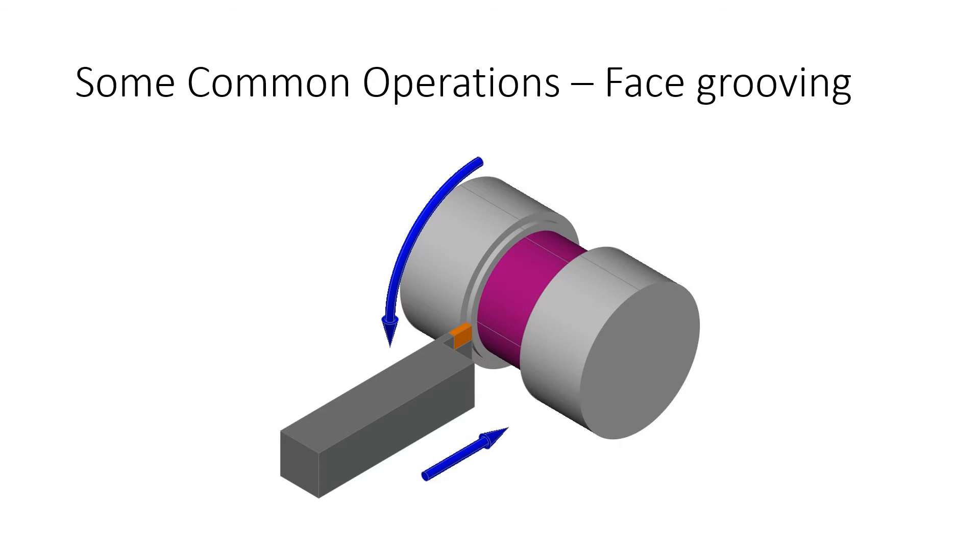Now we can have another operation also called face grooving in which the tool is moved like that and the workpiece is moving in the same direction. These are just some common basic operations of lathe and how various operations are done.